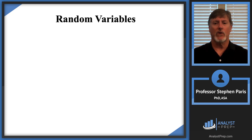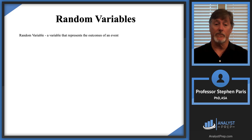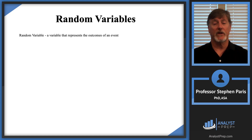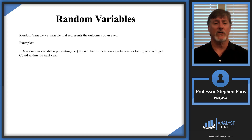So now what about random variables? Well, first of all, a random variable is a variable — but it's a variable that represents the outcome from an event. So let's look at some examples.